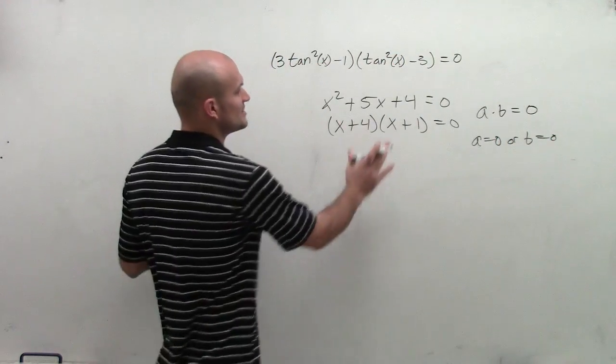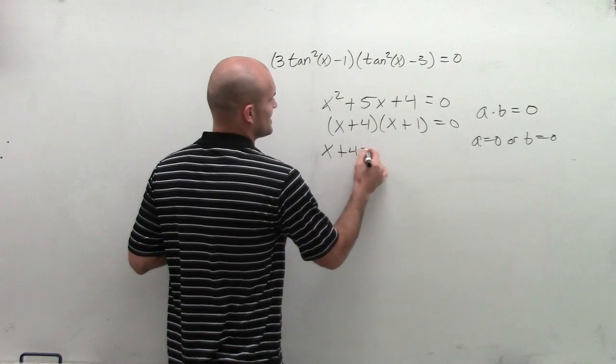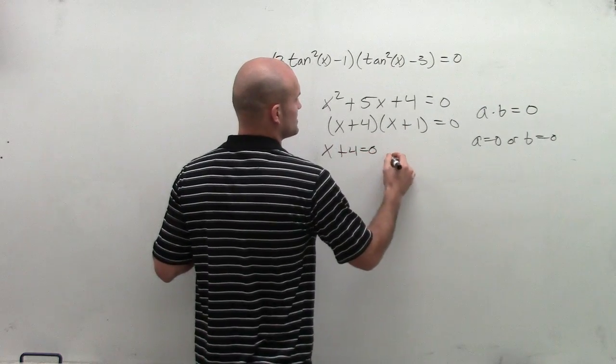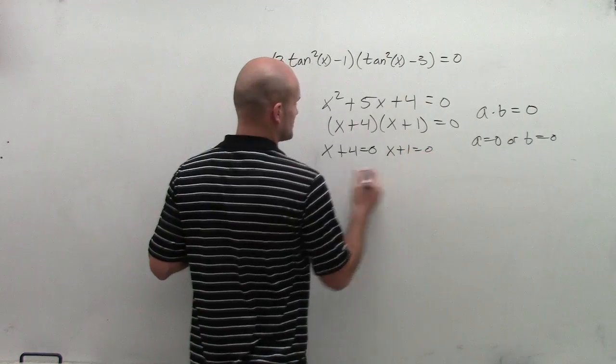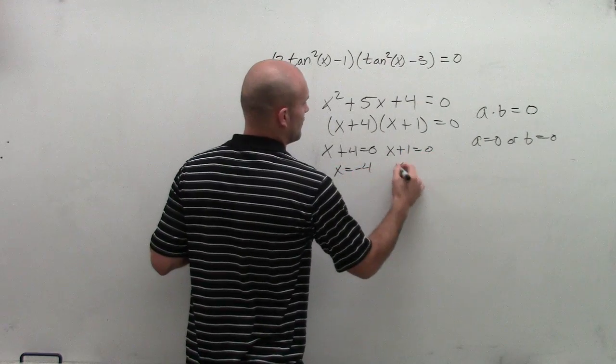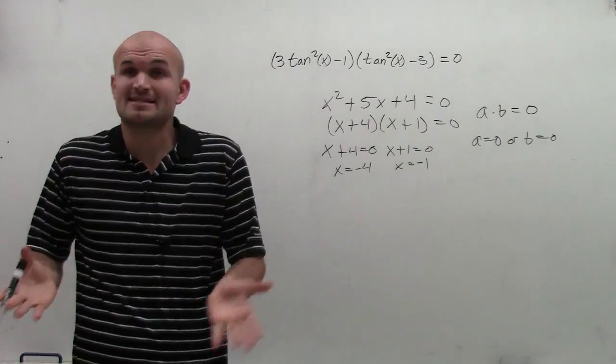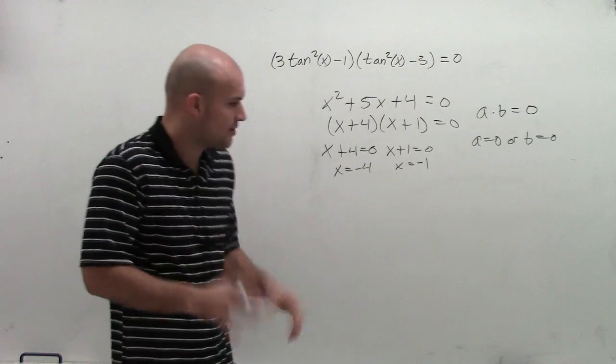So that was very important, because then what we did is we took these two and we said, all right, that means x plus 4 equals 0, or x plus 1 equals 0. Therefore, x equals negative 4 or x equals negative 1. And that's how we were able to find our solution, by using the zero product property.